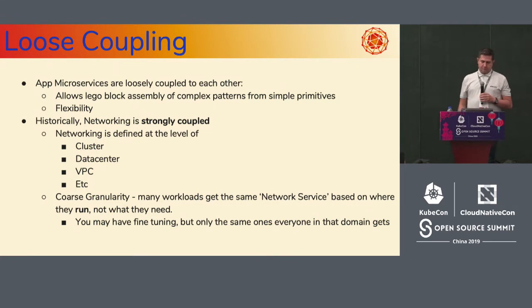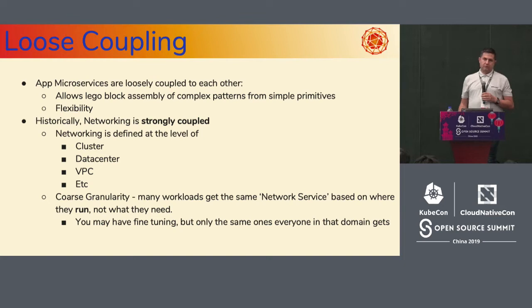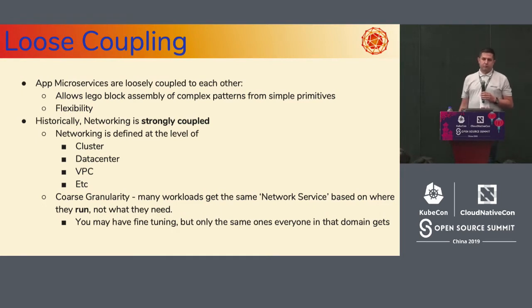When we talk about loose coupling, this is very familiar to application developers working with microservices — it's a way to abstract your building blocks through API abstractions so you can build complex functionality from small blocks. But historically, networking has been very strongly coupled to the infrastructure: your networking is coupled to your cluster, your data center, or your public cloud VPC. You don't have much granularity or flexibility once you start doing more advanced things.